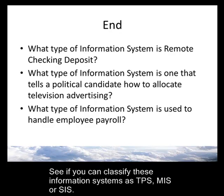We're at the end of the lecture, and here are questions to test your knowledge. Think about information systems at different organizational levels: at the bottom, transaction processing systems; in the middle, management information systems; and at the top, strategic or executive information systems. The first example is remote checking deposit — where you take your cell phone, take a picture of a check, and deposit it directly to your bank without going to the bank. What type of information system is this? That's right — transaction processing system. Lots of transactions, lots of people making deposits; it's at the lower level of the firm.